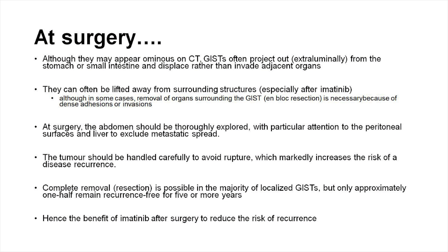At the time of an operation, what most surgeons do is look at the actual tumour and then do a full laparotomy examination — look at the whole abdomen, the linings, feel the liver — and make sure there aren't any other sites of disease. The resolution of CT scans is very good now, but there are still little bits of tissue that we can't see on CT, and it's very important to look for those and take them out when you're there.